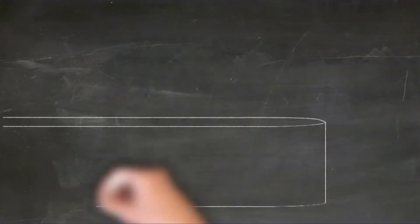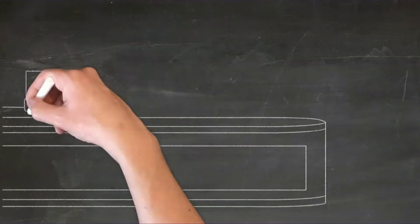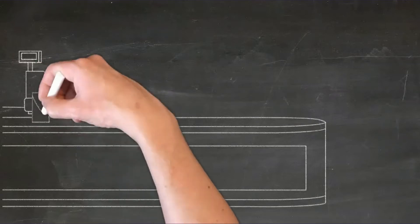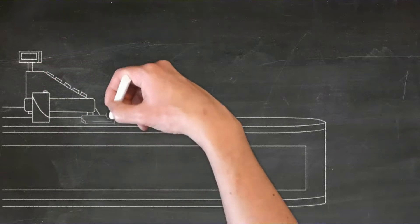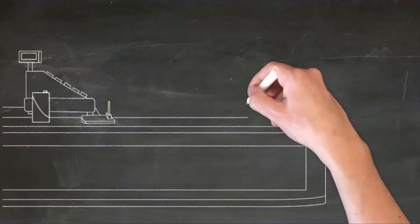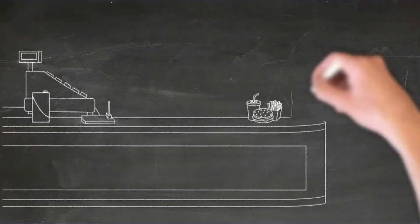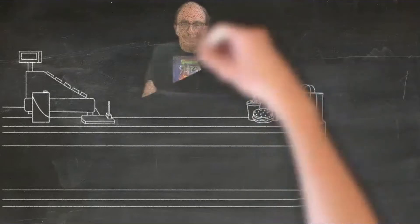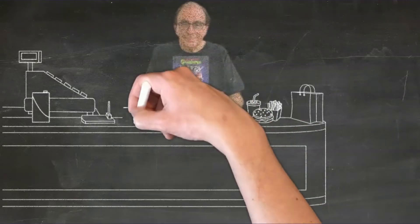Bob talks about the idea store, which has three sections. The first section is observations. One of the most hated pieces of advice to writers is 'write what you know,' but in this case I will agree with Bob. I don't think you need to necessarily write your life story.